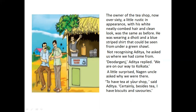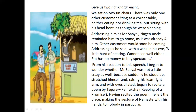A little surprised, Nagin uncle asked why they were there. Aditya said they had come to have tea. Nagin said certainly — besides tea he had biscuits and savouries. Aditya said he would like two Nankatai each, which is a type of famous Indian sweet popular in India and Pakistan. They sat on two tin chairs. There was only one other customer sitting at the corner table, not drinking tea but bending his head as if sleeping.